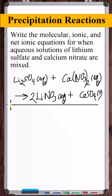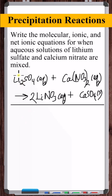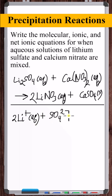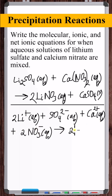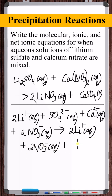To construct the ionic equation, we break up any aqueous compounds into ions if they're strong electrolytes. For these precipitation reactions, anything aqueous gets broken into ions. So we write: 2Li⁺(aq), SO₄²⁻(aq), Ca²⁺(aq), 2NO₃⁻(aq) on the reactant side, yielding 2Li⁺(aq), 2NO₃⁻(aq), and CaSO₄(s) on the product side. That is the ionic equation.